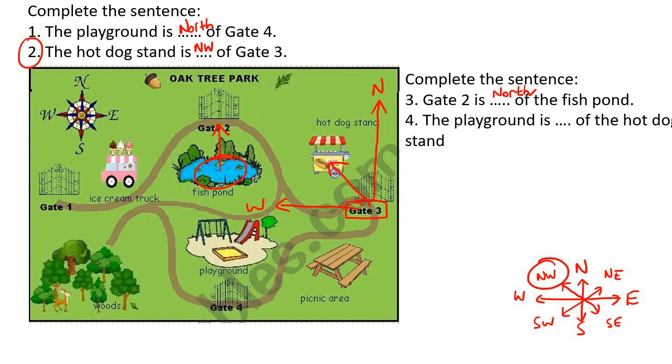And then number four. The playground is what of the hot dog stand. So the hot dog stand. We're going to start over there at the hot dog stand. And then we want to go to the playground. So it's not south. It's not west. So it's the in-between one, which is southwest, which we can see over here. So we'll just say south west.